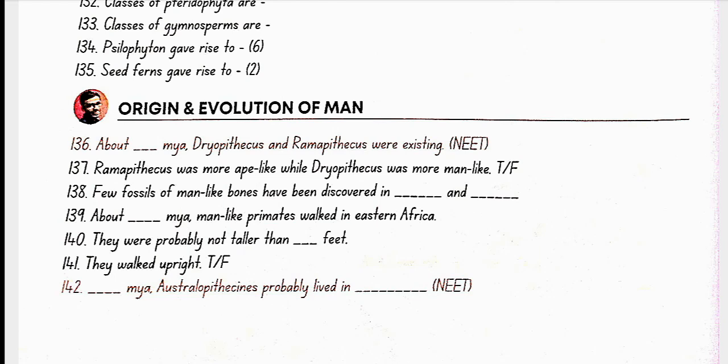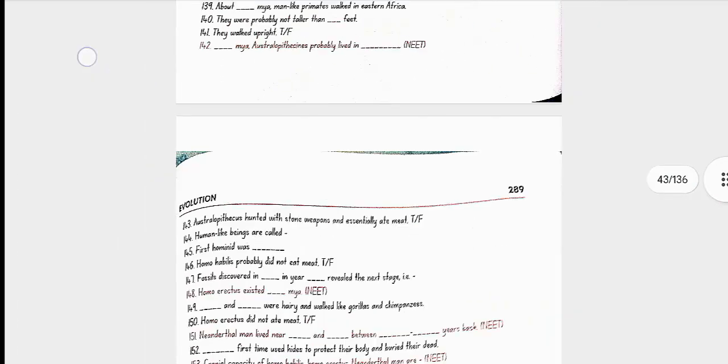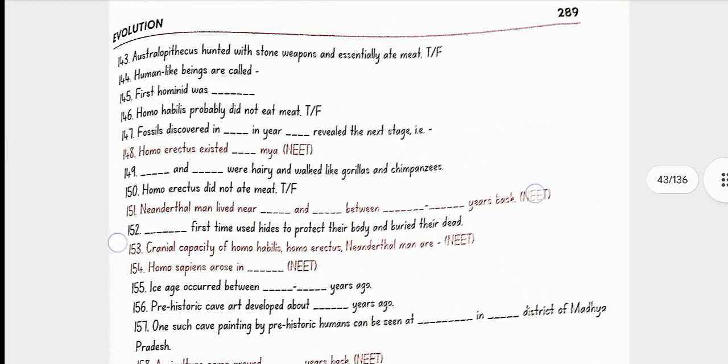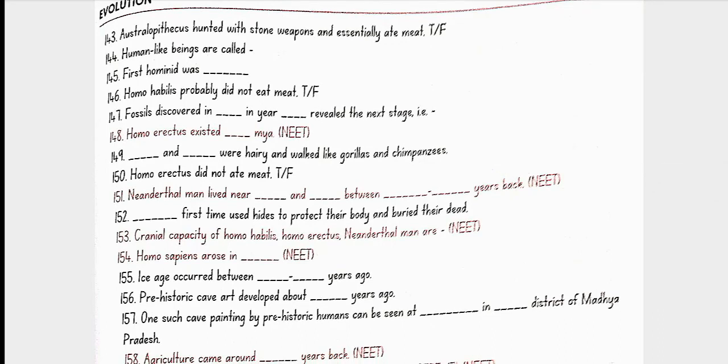Origin and Evolution of Man. About 15 million years ago, Dryopithecus and Ramapithecus were existing. Ramapithecus was man-like and Dryopithecus was ape-like. Few fossils of man-like bones have been discovered in Ethiopia and Tanzania. About 3 to 4 million years ago, man-like primates walked in East Africa. They were probably not taller than 4 feet. They walked upright. 2 million years ago, Australopithecus probably lived in Eastern Africa grassland. Australopithecus essentially ate fruit, not meat.